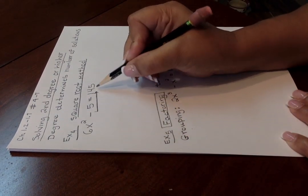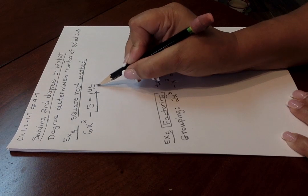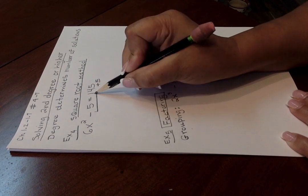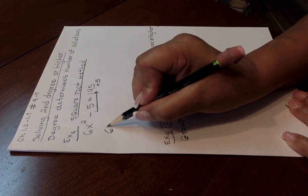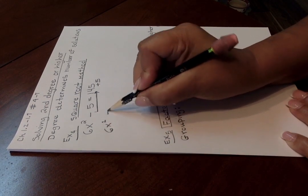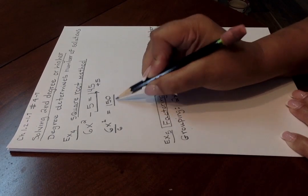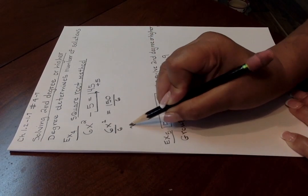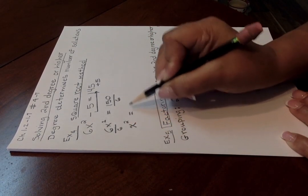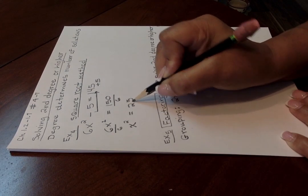So I'm going to bring this negative 5 over here, making it a positive 5, leaving you with 6x squared is equal to 150, and dividing by 6 on both sides so that the squared term is completely by itself, giving you 25.